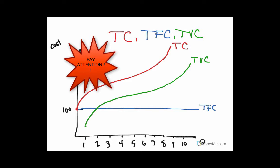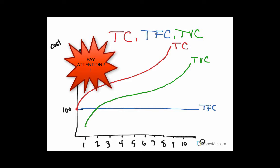Next we're going to do some marginal and average curves. We're going to graph the marginal cost, the average variable cost, and the average total cost curves. These are the ones you're going to see a lot more often — they're used pretty widely in microeconomics — so it's important that you understand these.